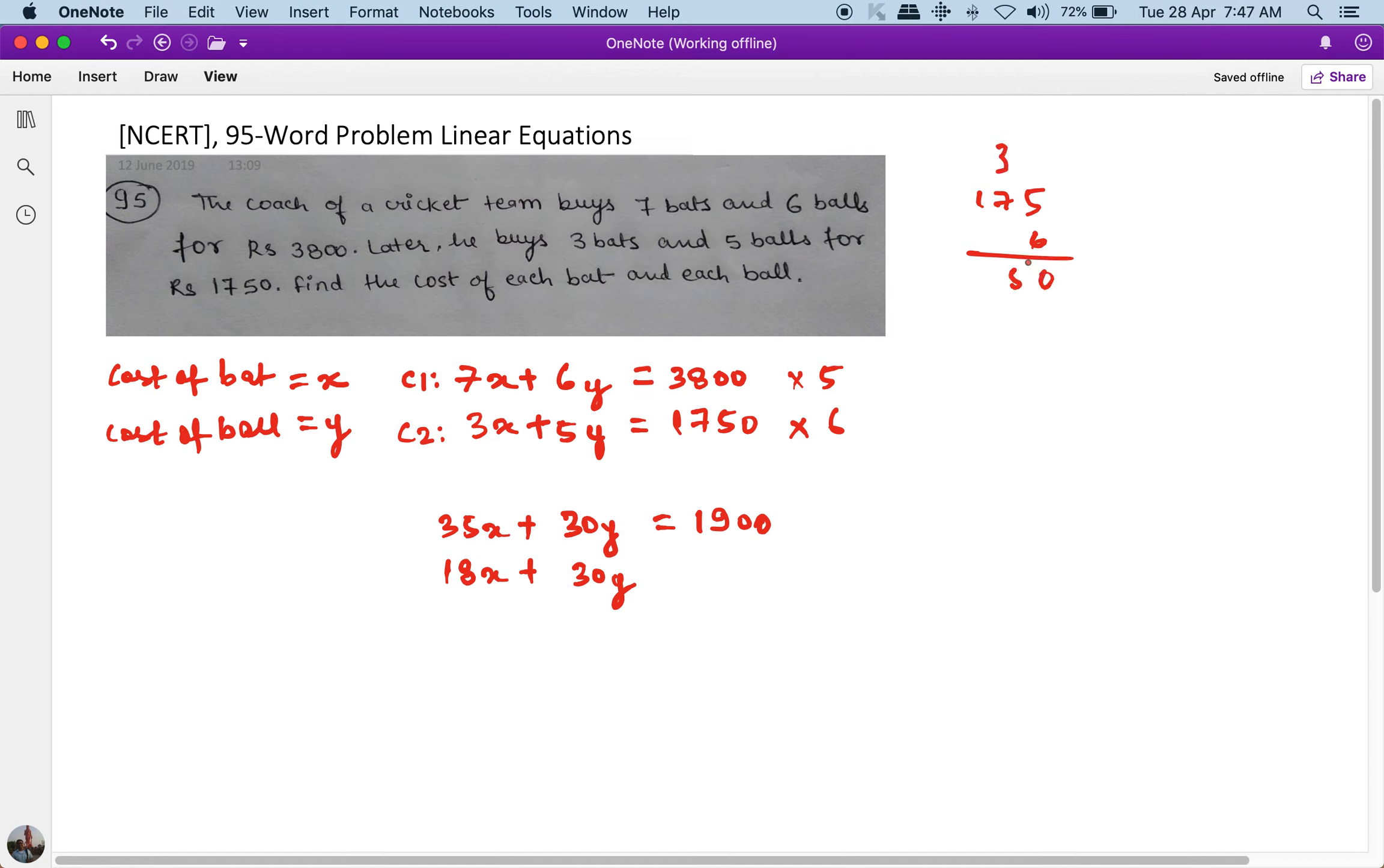So the first equation gives 19000 and the second gives 10500. Now I have to subtract the second from the first. The 30y gets cancelled, and 35 minus 18 is 17, so 17x equals